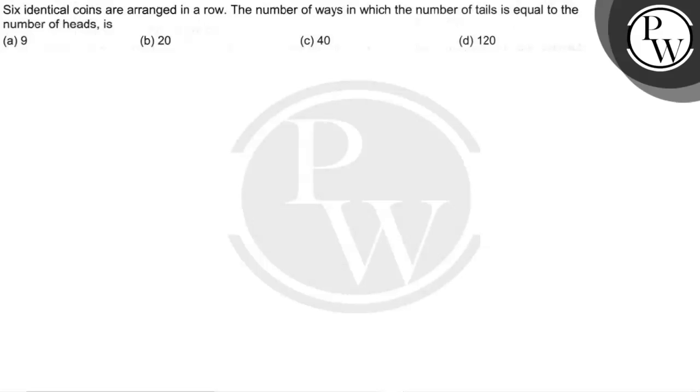Hello, let's read the question. Six identical coins are arranged in a row. The number of ways in which the number of tails is equal to the number of heads is...